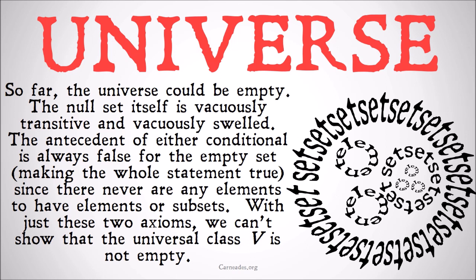So far it could just be the null class and nothing else. No sets exist right now — we could have a universe with no sets. With just the two axioms we can't show that the universal class V is not empty. Note this is very different from proving that it is empty. We're not saying we can prove with these two axioms that the universal class is identical to the empty class — we're saying that we can't disprove it.